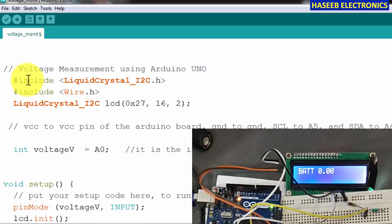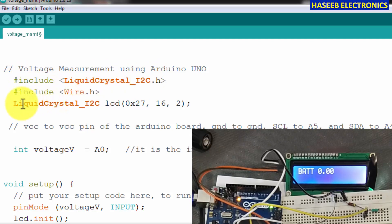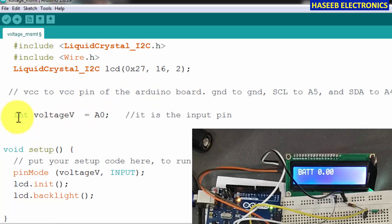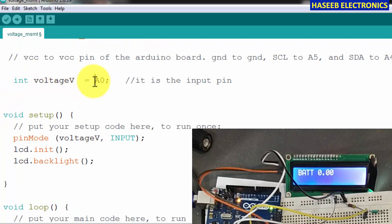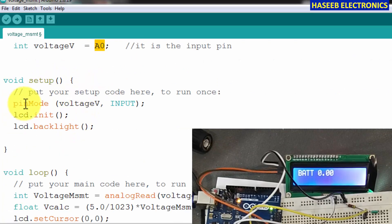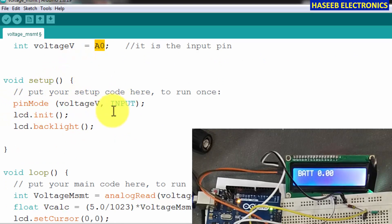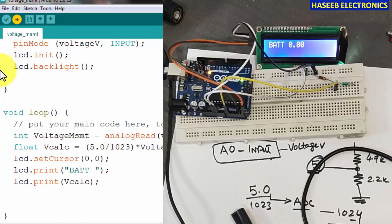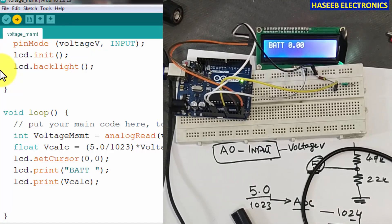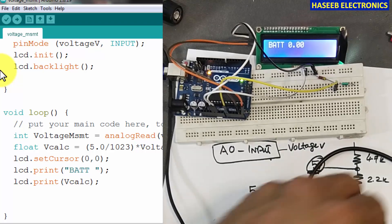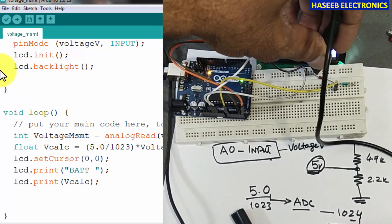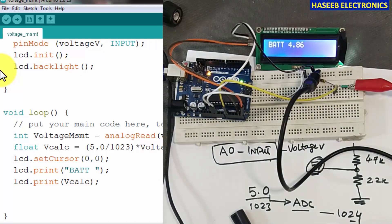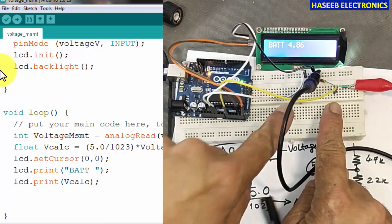Now our code is complete. We can write it. We said include this library, include wire.h, liquid crystal I2C value. Its address is this and these are the pin connections. We provided integer voltage value. We defined A0 pin, that is input pin. Pin mode voltage value is A0, that is input pin. LCD initialized, yes. Upload. The program is uploaded. Now we can connect the voltage here. Ground to ground, positive to positive. Now it is displaying 4.86 volts. It is connecting across this resistor.